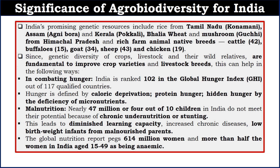Let's see the significance of agrobiodiversity for India. India's agriculture is very diverse — we have multiple breeds of animals and different species of rice and wheat. In Tamil Nadu, we have Koonamani rice; in Assam, Agnibora rice; in Kerala, Pokkali rice. We also have Balia wheat and Gucchi mushroom in Himachal Pradesh. Looking at cattle breeds: India has 42 types of cattle, 15 types of buffalo, 19 types of chicken, and 43 types of sheep.